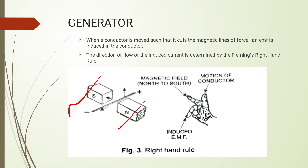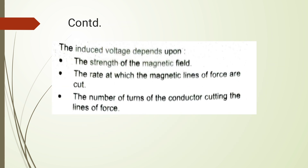The direction of flow of induced current is determined using Fleming's right-hand rule. The right thumb indicates the motion of the conductor, the four fingers indicate the magnetic field direction, and the middle finger indicates the induced EMF. The induced voltage depends on the magnetic field and on the rate at which the magnetic lines of force are cut.